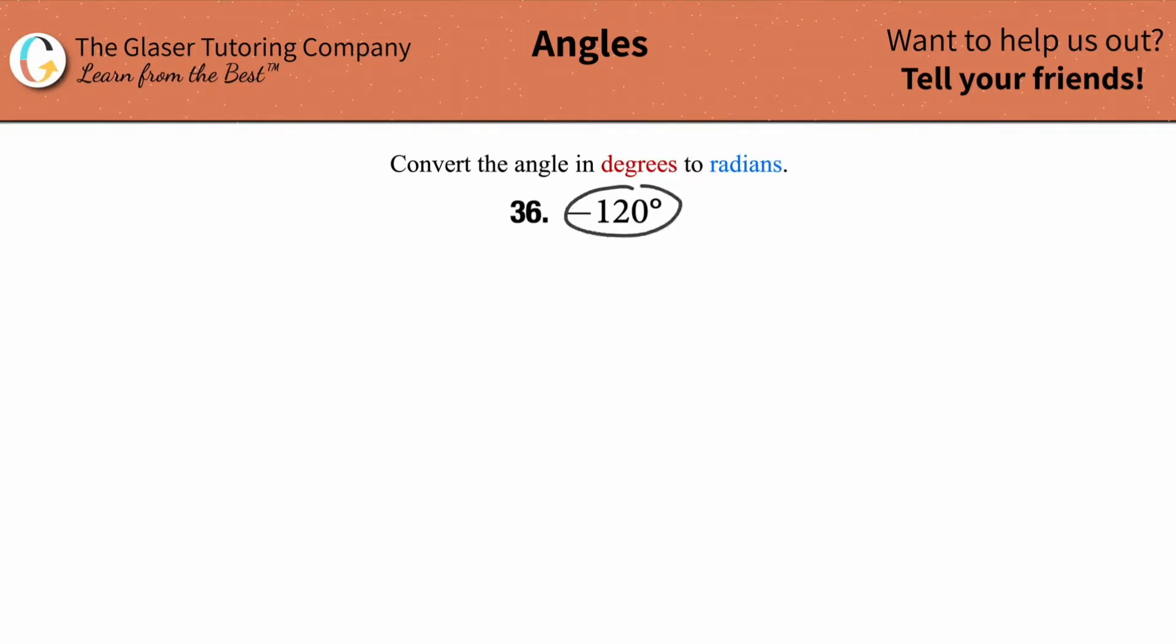So how do we convert negative 120 degrees into radians? We need to first start with a known relationship between radians and degrees.